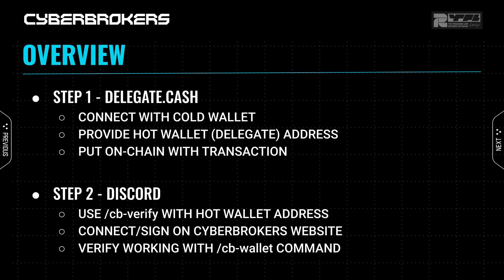Setting this up is a two-step process. Step one is setting up Delegate.cash from our website. You connect with your cold wallet once to verify ownership, provide the address of your hot wallet that you want to delegate to, and execute a transaction that puts that information on-chain. Step two is to go into Discord and use our verify command with your hot wallet, which will lead you to our website where you connect and sign to verify ownership of the hot wallet — no transactions. You can then verify everything's working using the cbwallet command in Discord, which will show your hot and cold wallet and all your assets.